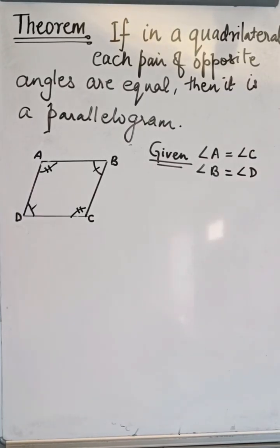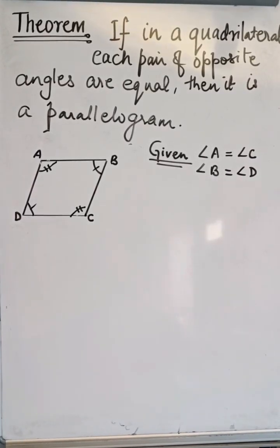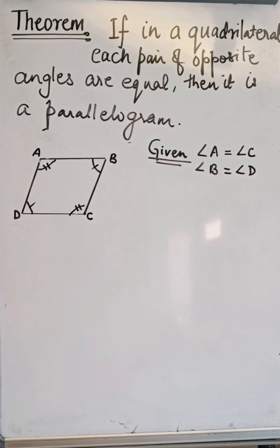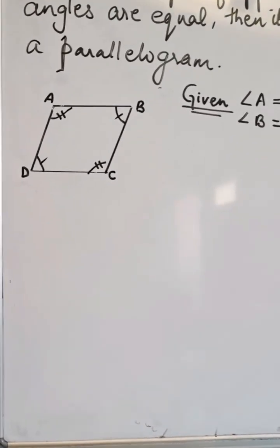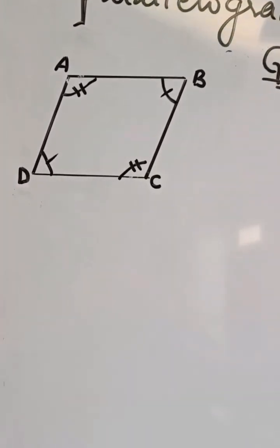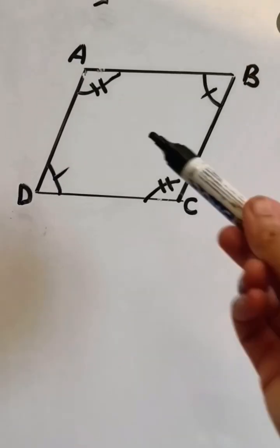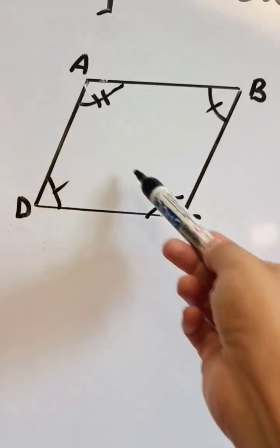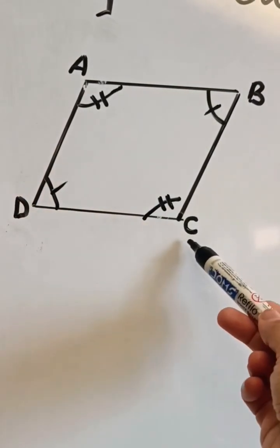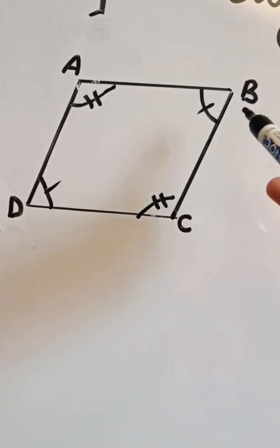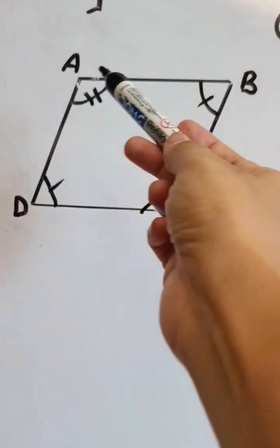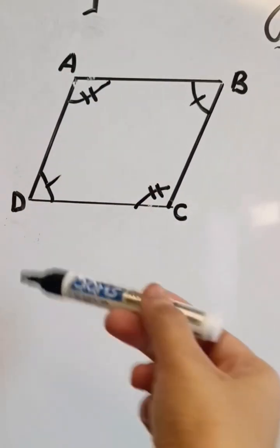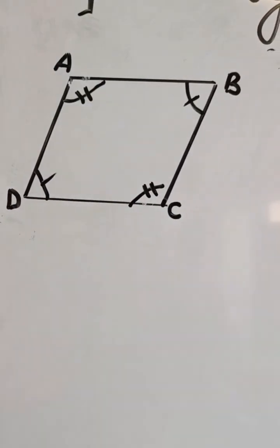Let us prove a theorem: if in a quadrilateral each pair of opposite angles are equal, then it is a parallelogram. ABCD is a quadrilateral where angle A equals angle C and angle D equals angle B. We need to prove that ABCD is a parallelogram.